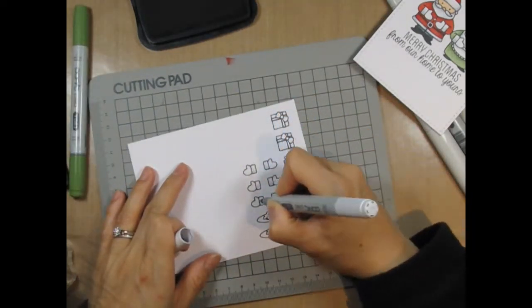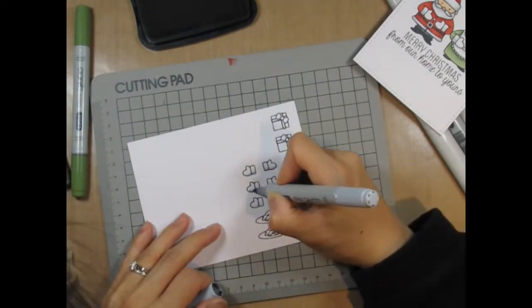And now I'm going to color in all these smaller elements and fussy cut them.